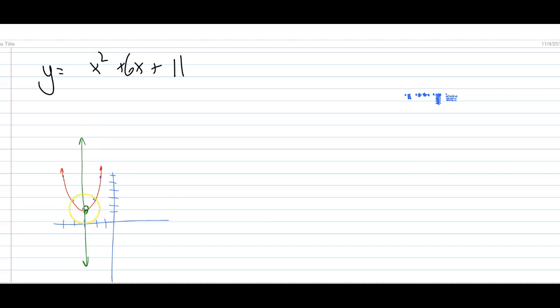And it's always going to go through the vertex. So since our vertex was negative 3 comma 2, that means that our axis of symmetry is x equals negative 3. That's the vertical line that goes through our vertex.